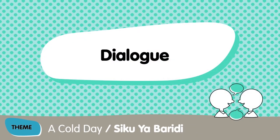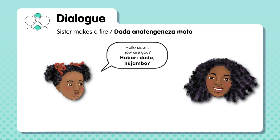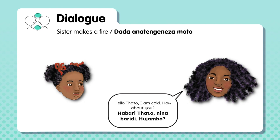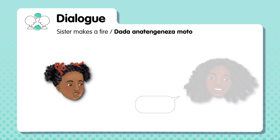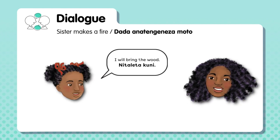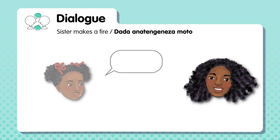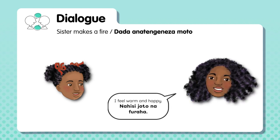Dialogue. This dialogue takes place between Tato and her sister. Habari dada? Ujambo? Habari Tato? Ninabaridi. Pia mimi naisi baridi leo. Nitawasha moto. Nitaleta kuni. Huu ni moto mzuri. Naisi joto. Asante. Naisi joto.